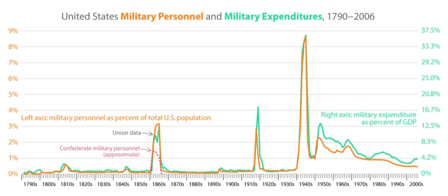Japanese forces soon seized American, Dutch, and British possessions across the Pacific and Southeast Asia, except for Australia, which became a main American forward base along with Hawaii. The loss of eight battleships and 2,403 Americans at Pearl Harbor forced the U.S. to rely on its remaining aircraft carriers, which won a major victory over Japan at Midway just six months into the war, and on its growing submarine fleet.